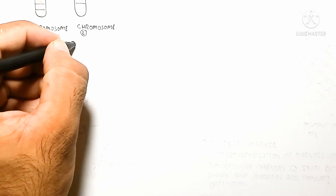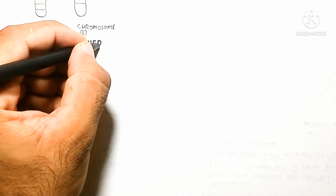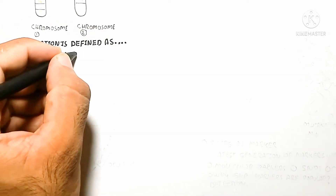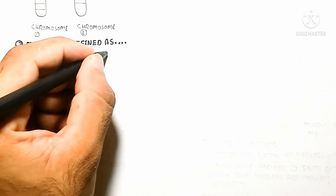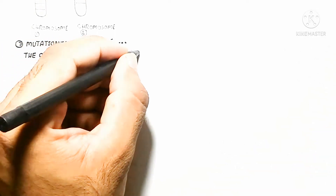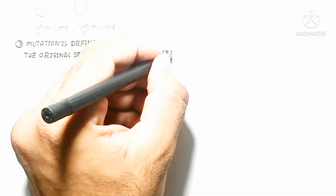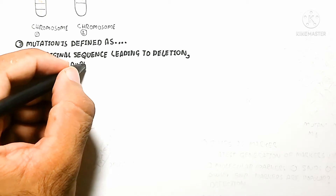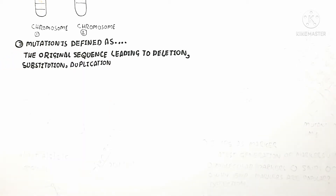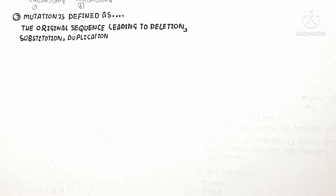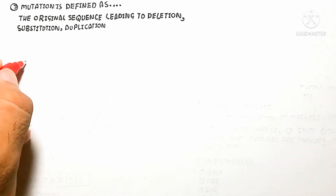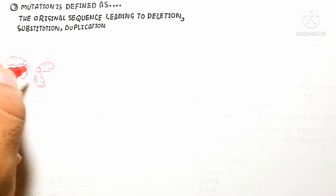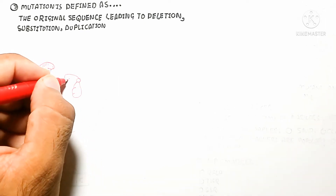Now let's understand what mutation is. Mutation is defined as a change in the original sequence leading to deletion, substitution, or duplication. These are point mutations — a point mutation can delete a nucleotide, cause a substitution, or cause a duplication.